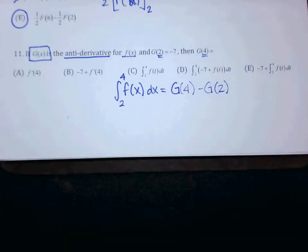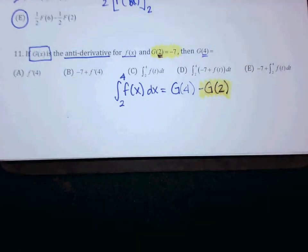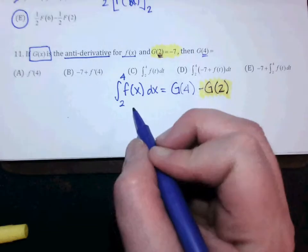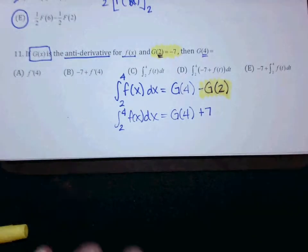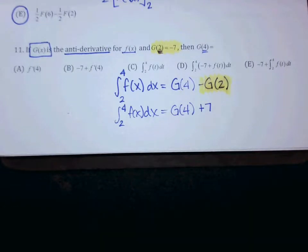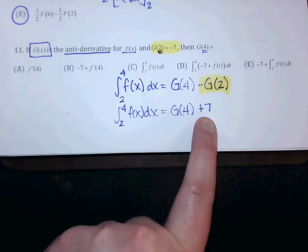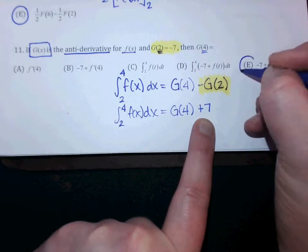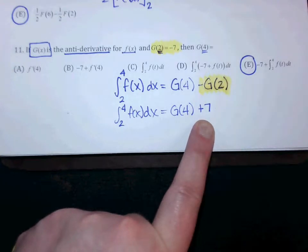They gave you a substitute for one of those letters. G of 2 is going to switch to be negative 7. So this is going to switch — if it's minus G of 2, minus a negative 7 becomes a plus 7. So far we have the integral of f of x dx equals G of 4 plus 7. What are they asking you to solve for? G of 4. If I want to get G of 4 by itself with a plus 7 on its side, I subtract 7 across. Look at your answer choices — E. When you subtract the 7 across, it shouldn't jump into the integral with everything else.